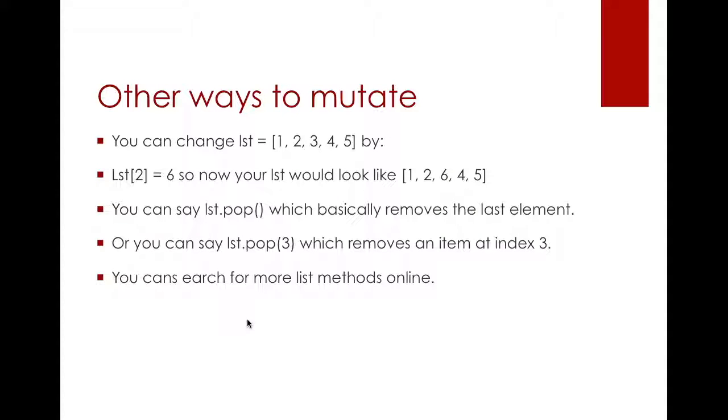There are other ways to mutate lists. For example you can change the value by accessing a certain index. So I have 1, 2, 3, 4, and 5. Let's say I wanted to set the value at the second index to 6. So I go to index 0, 1, 2. So the second index's value is 3. If I use this line your list would be 1, 2, 6, 4, 5 because you actually mutate the list.